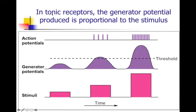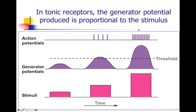Tonic receptors produce a generator potential that is exactly proportional to the stimulus. So if it's small and you don't reach a threshold, you have no action potentials. If it's larger, the size of that potential determines how many action potentials you will have. A very large stimulus produces a very high frequency of action potentials.